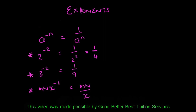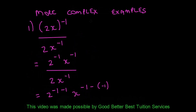Let's look at another example — these are slightly more complex. We have 2x to the power negative 1 over 2 times x to the power negative 1. This is our distributive law: we share the negative 1 into the brackets, giving us 2 to the power negative 1 times x to the power negative 1. We got that by distributing the outside power of negative 1 to both the 2 and the x.